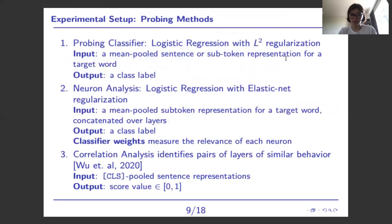We chose three introspection techniques. The first is standard logistic regression: it inputs word representations and predicts the word's property from a given inventory — for example, whether a word is singular or plural. The second technique also uses logistic regression, but inputs word representations from all layers concatenated into a single vector; here we are more interested in the model's weights to see which layers have the most significant impact on property prediction. The third technique is unsupervised, based on canonical correlation analysis, identifying layers that perform similarly based on CLS sentence representations.